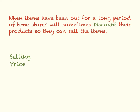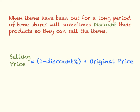When items have been out for a long period of time, stores will sometimes discount their products so that they're able to sell the items. The formula for discount is: selling price equals 1 minus the discount percent, written as a decimal, times the original price.